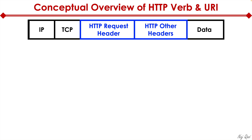Some conceptual level understanding of HTTP verbs and URIs. If you were to look into a packet that actually has HTTP verbs and URIs contained within it and zoom into it, looking at the headers of that packet, we're going to see the layer three header, the layer four header, and then the rest of the information. When we zoom into the HTTP side, we'll see the HTTP request header and then HTTP other headers.